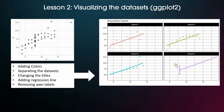Secondly, I will show you how to visualize these data sets quickly — going from a basic scatter plot to an advanced chart where we add colors, separate the data sets, change the titles, add regression lines, and also remove the axis labels. The third lesson you can learn from these data sets relates to linear regression.